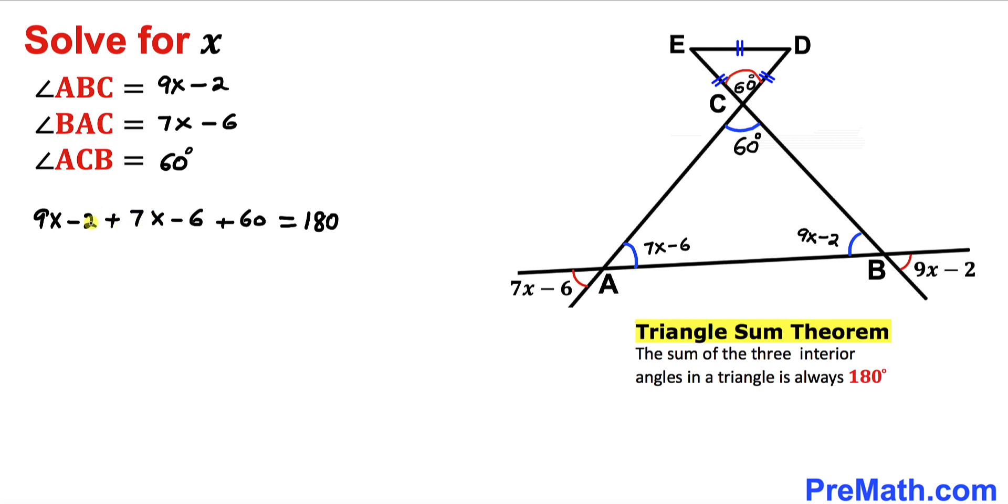Let's go ahead and combine the like terms on the left hand side. That is going to give us 16x plus 52 equals 180 degrees.